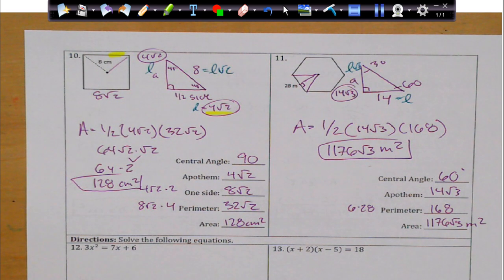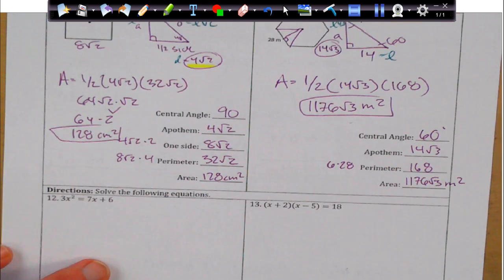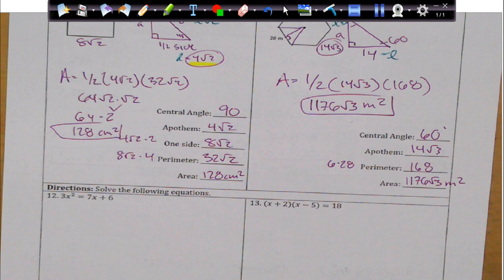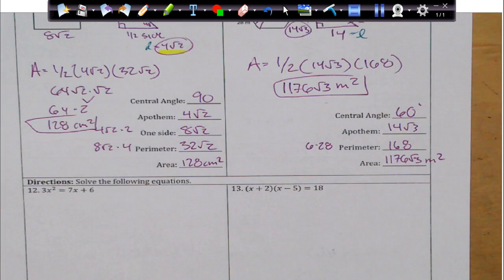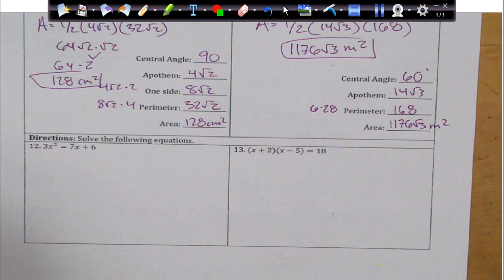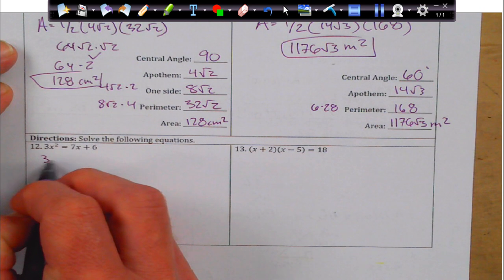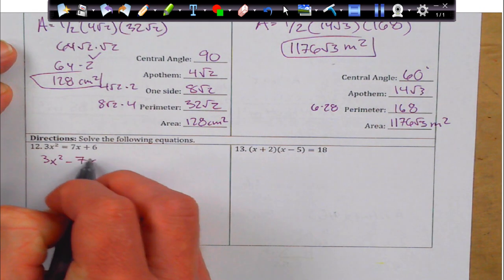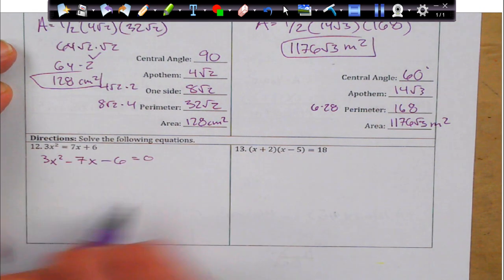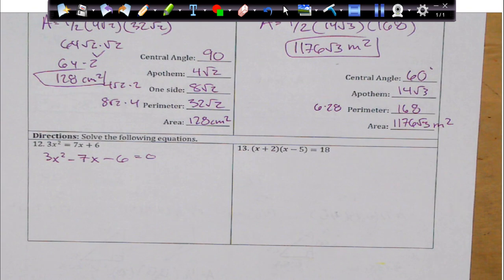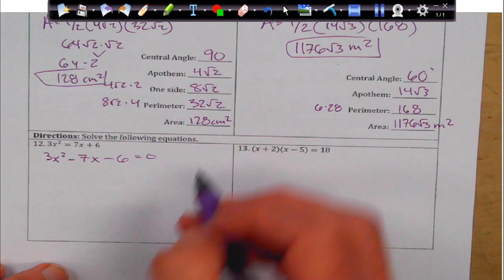And we got a little factoring. No fun like factoring fun. So, here we go. Let's see. First thing we're going to do is we're going to move everything over here. So, we're going to get 3x squared. We're going to subtract the 7x and subtract the 6. Set equal to 0. Look for GCF. I don't see any GCF here. So, we're going to have to split the middle term.